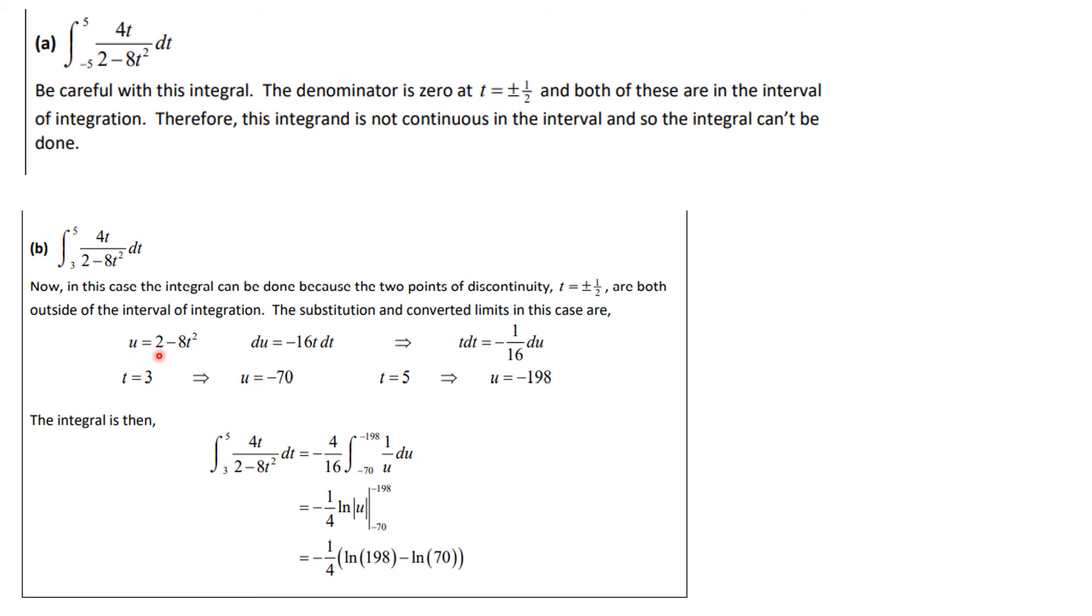We will use this substitution. U is 2 minus 8t squared, du is this, and t dt is minus 1 over 16 du, and we will adjust our limits. When t is 3, u is minus 70, and when t is 5, u is minus 198, so the integral is transformed to this. Notice I integrate 1 over u, get the natural logarithm of the absolute value of u, and notice I'm taking the absolute values so I turn them into positives, and this is a correct final answer. You could write this different ways, but we'll just leave it that way for now.